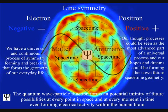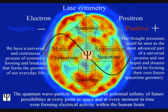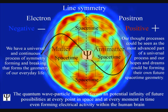If these electrical impulses that cause chemical changes are formed by photons, then consciousness is formed by the physics of quantum mechanics. Therefore our thought processes could be seen as the most advanced part of a universal process, and our hopes and dreams could be forming their own future space-time geometry.